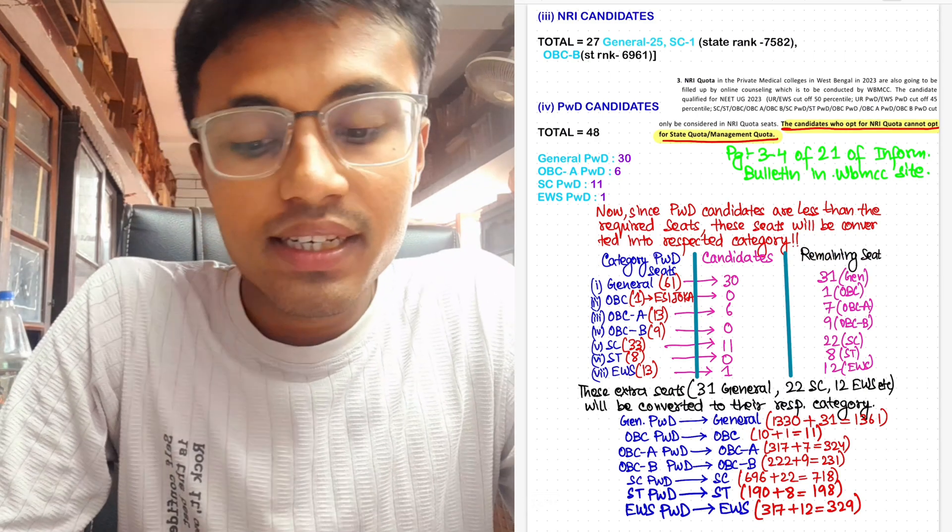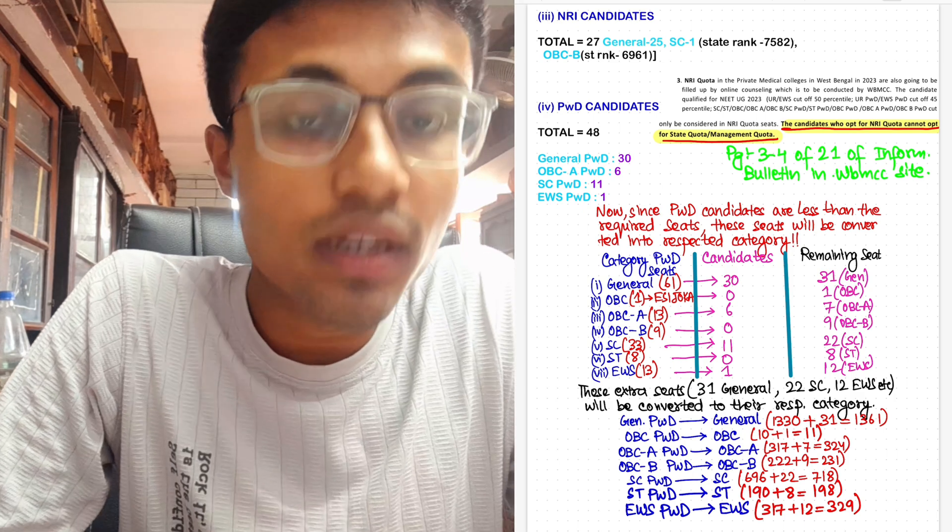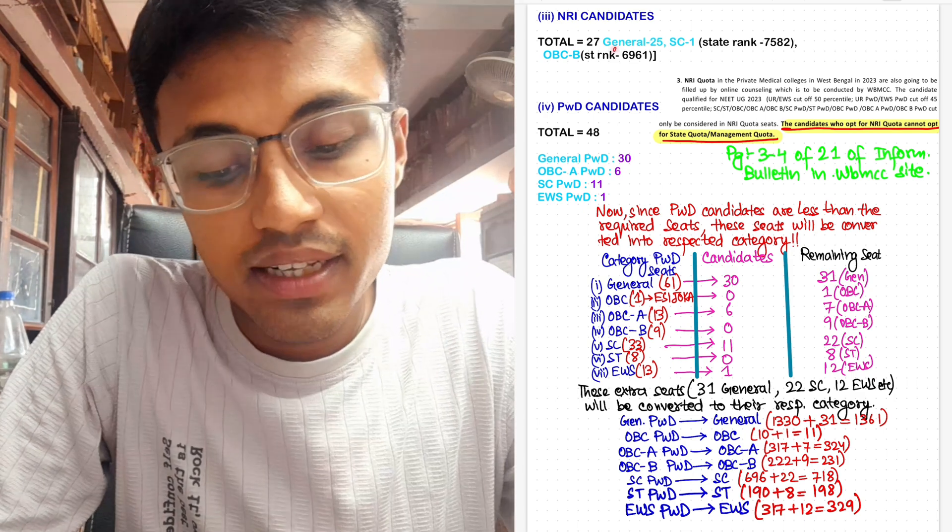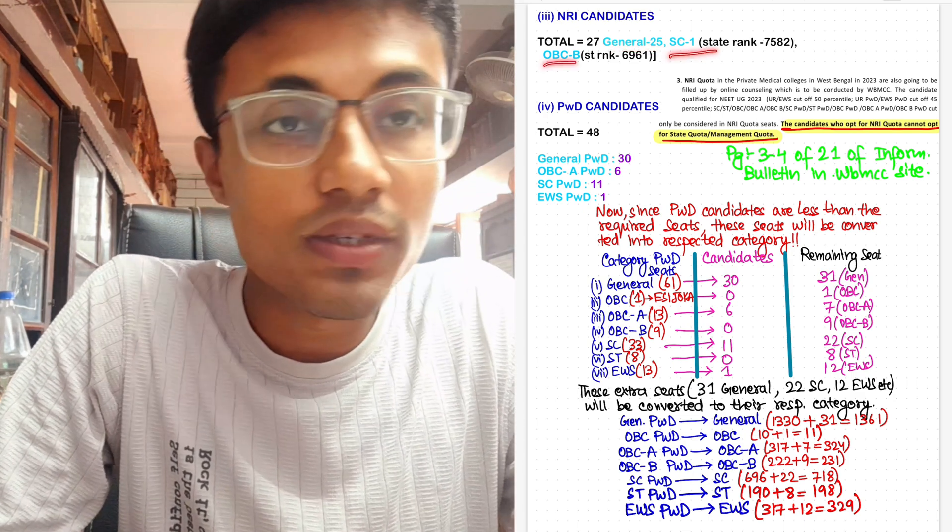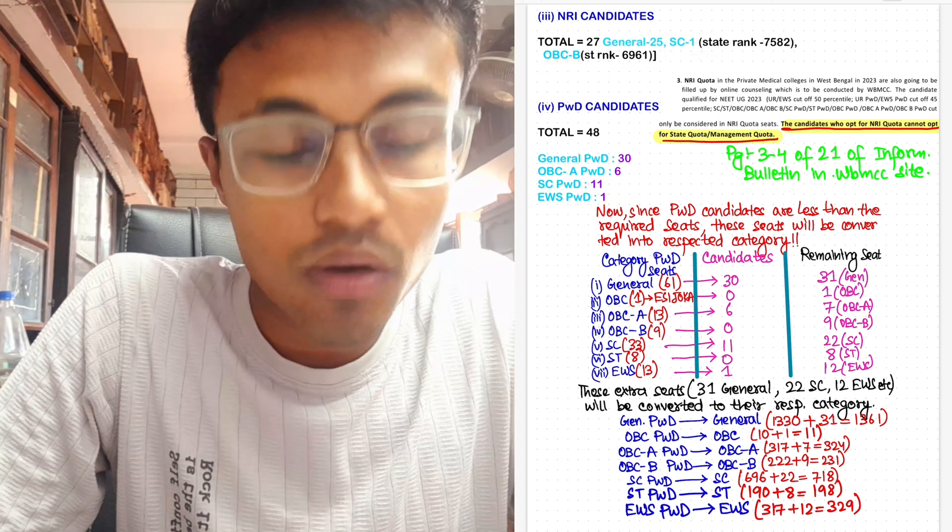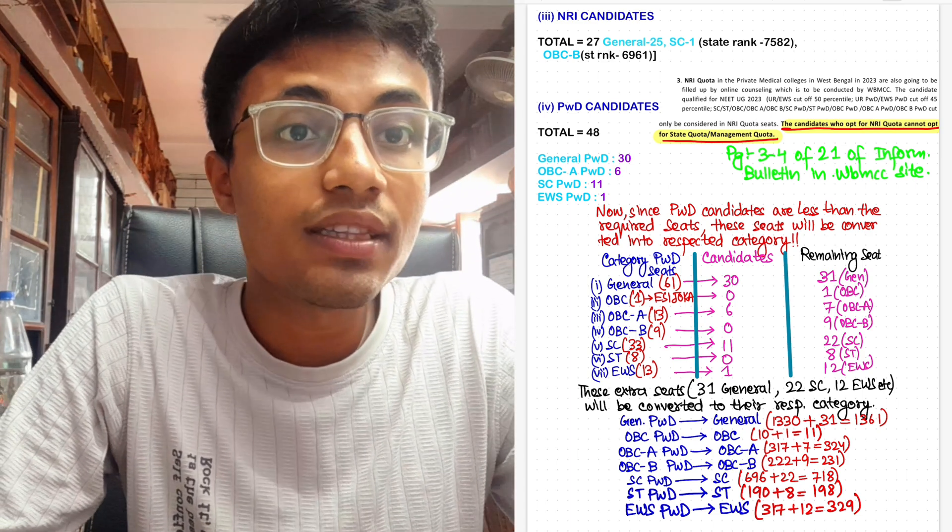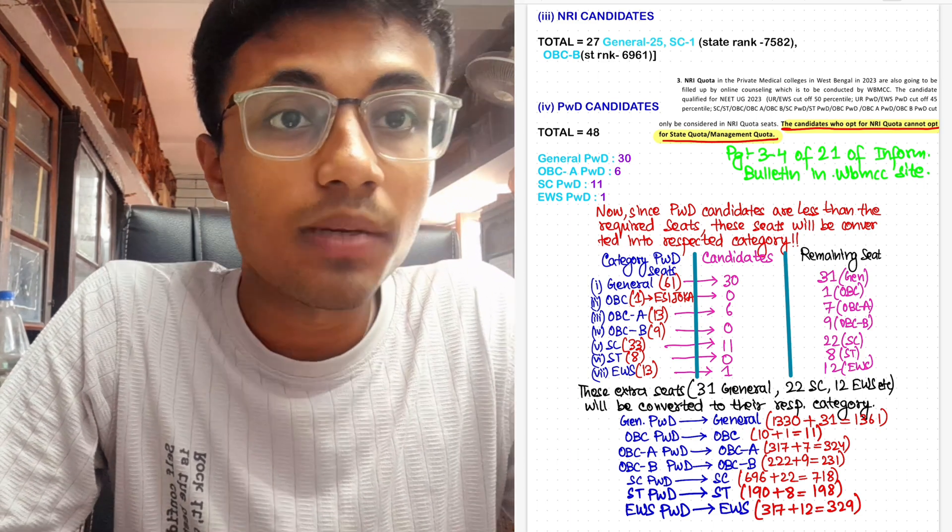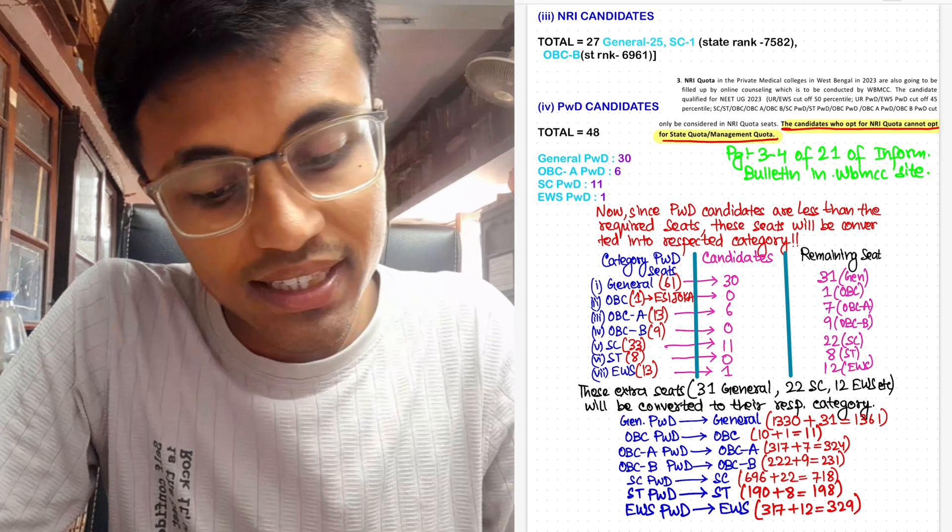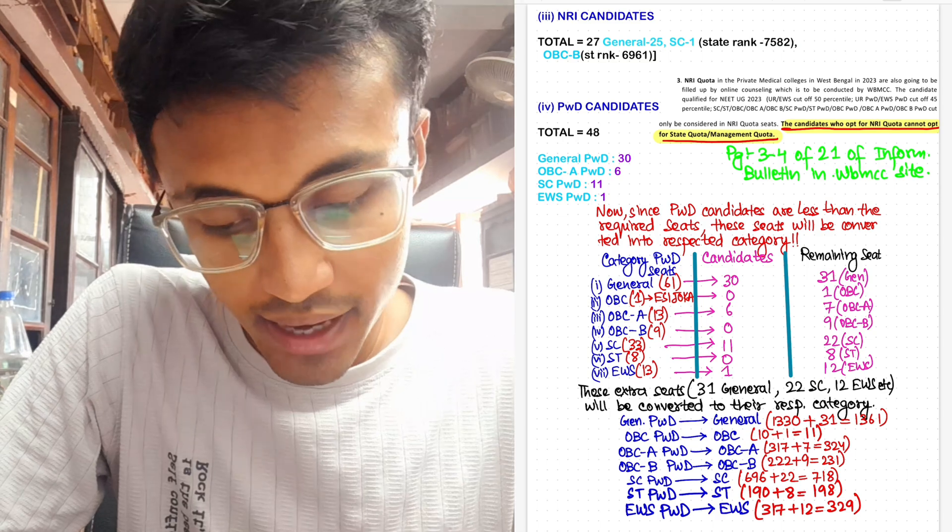Now what's interesting this year is that the NRI candidates who participated are a total of 27: 25 general, one SC, and one OBC-B. Now people are concerned about the state MBBS counseling, so the NRI candidates aren't able to participate in the state quota or management quota for the medical college in West Bengal, and this is given in page 3 and 4 of the information bulletin in WBMCC site.